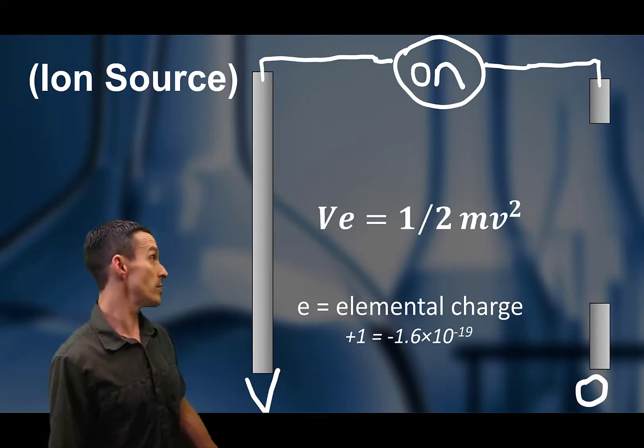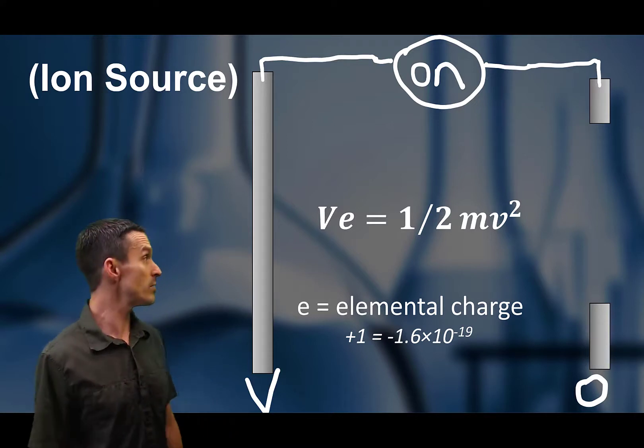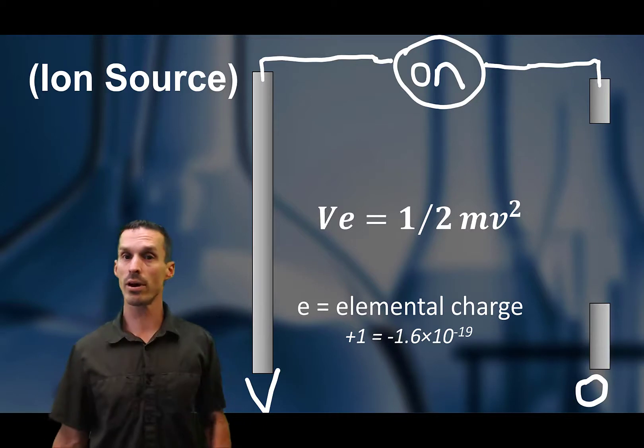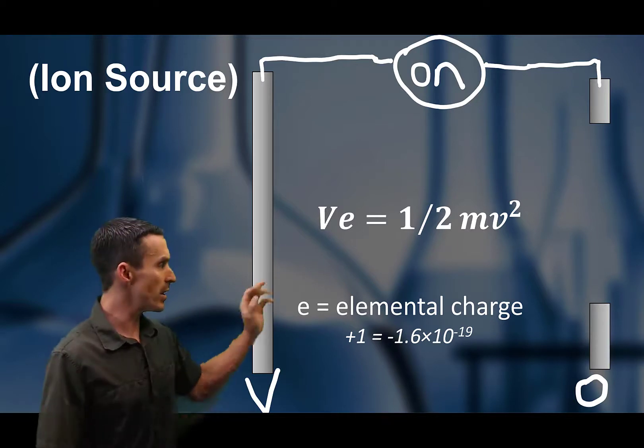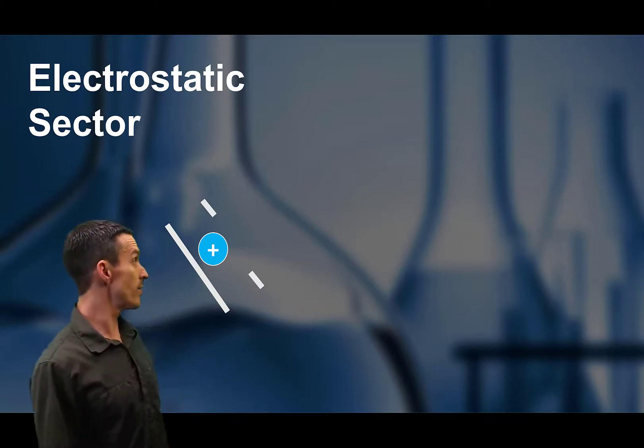Now we can actually equate the kinetic energy of the ion. So one half mv squared is related to the volts times the charge E. So we're not talking about Z anymore. It's actually the elemental charge, but you think it's kind of one and the same.